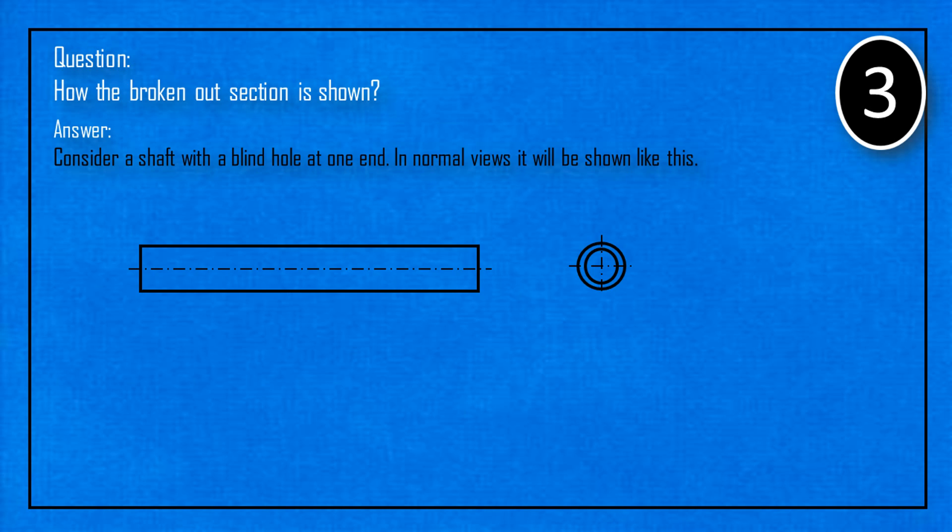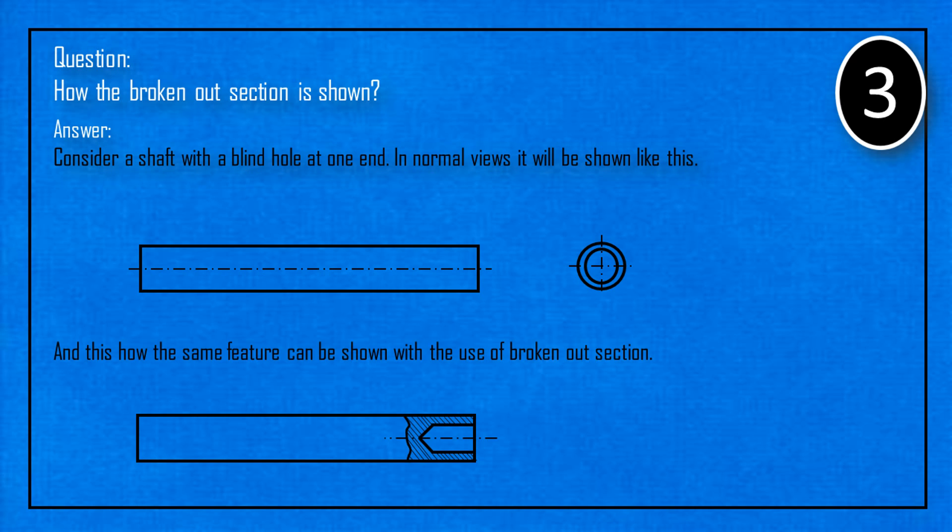How is the broken out section shown? Consider a shaft with a blind hole at one end. In normal views, it will be shown like this. And this is how the same feature can be shown with the use of broken out section.